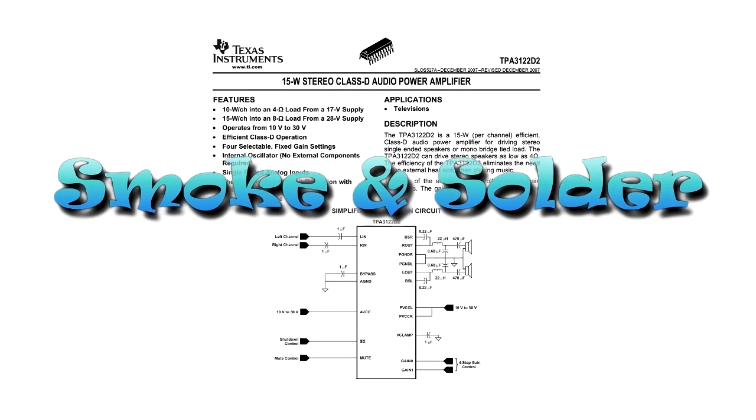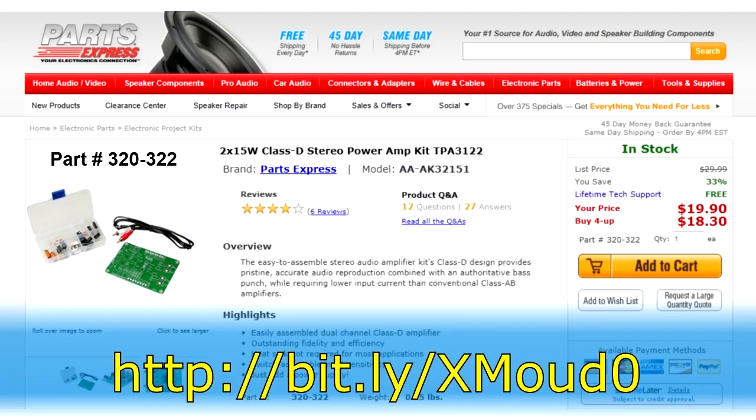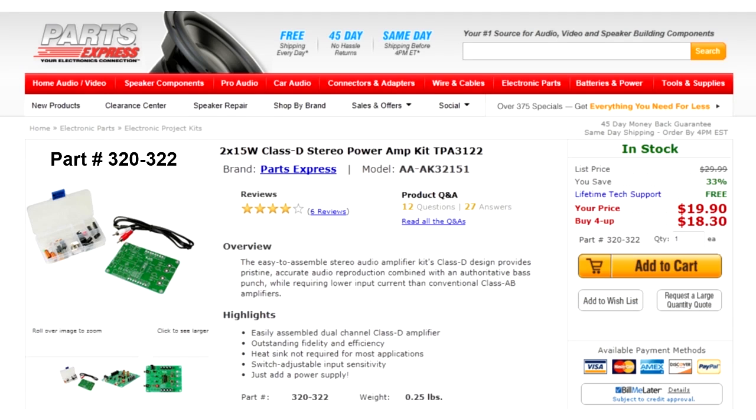This week on Smoke and Solder, we're building a highly efficient 15-watt stereo Class D amplifier using a kit from parts-express.com. It's part number 320-322, made by Shure Electronics.